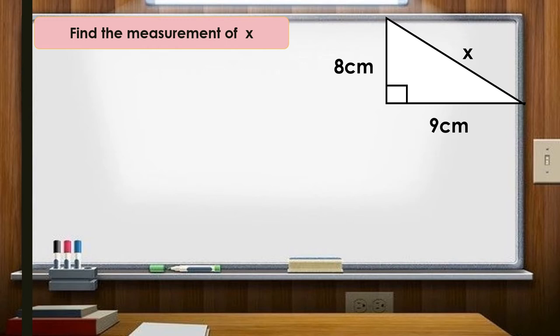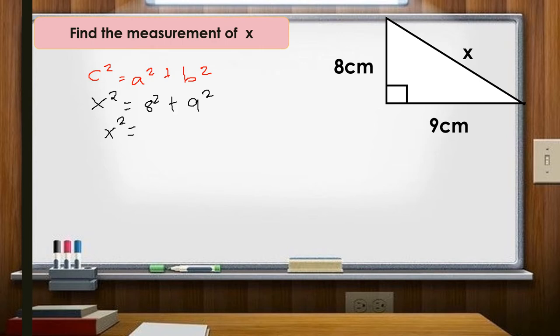Find the measure of x. To solve this, we need to know the formula for the Pythagorean theorem: c² = a² + b². Since c is the hypotenuse, which is x, we substitute: x² = 8² + 9². That gives us x² = 64 + 81, and 64 + 81 = 145.